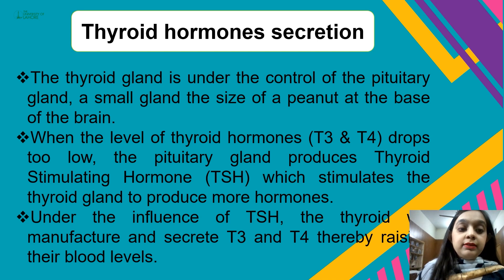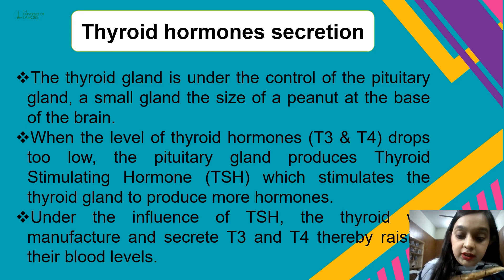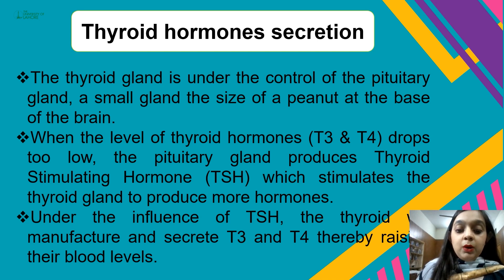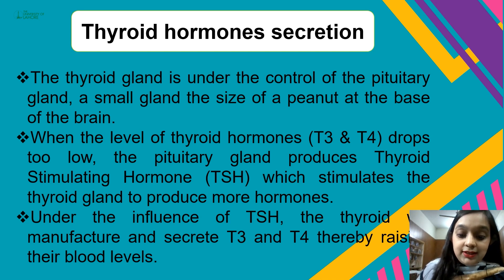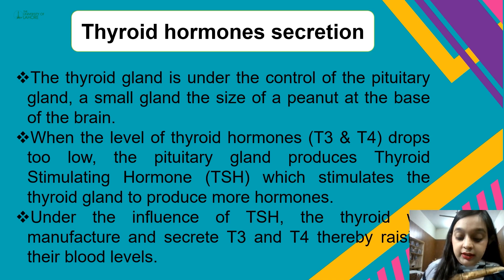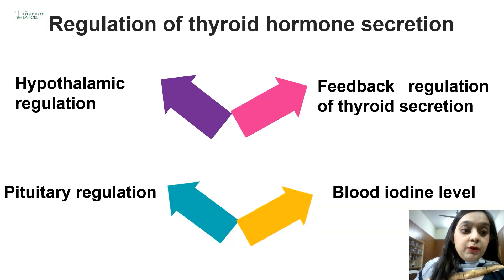Thyroid hormone secretion is controlled by the pituitary gland — a small, peanut-shaped gland present in the hypothalamus — which is classified into the anterior and posterior pituitary. When the levels of thyroid hormones T3 and T4 drop too low, the pituitary gland produces thyroid stimulating hormone (TSH). TSH stimulates the production of T3 and T4, resulting in the raising of their levels in the blood.